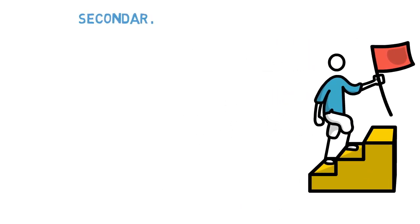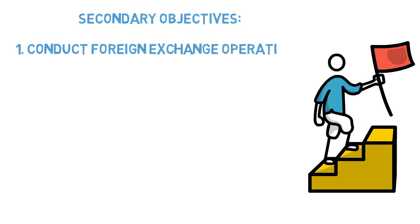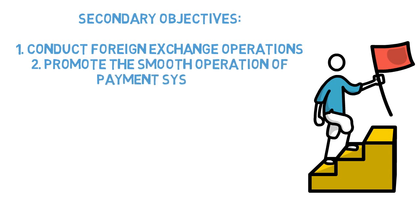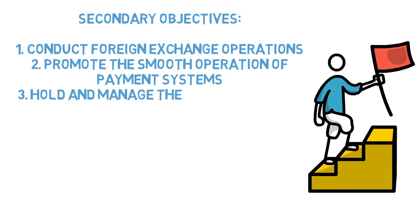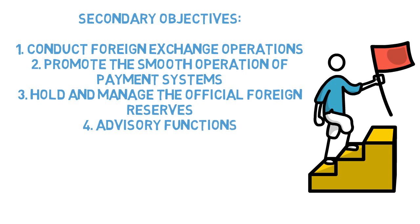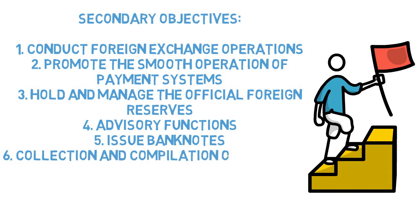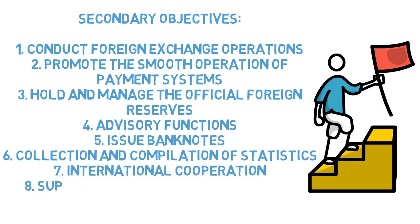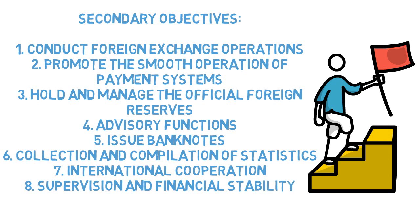The European Central Bank also has a number of secondary objectives. They conduct foreign exchange operations, buying and selling the euro and other currencies. They promote the smooth operation of payment systems within the banking system. They hold and manage the official foreign reserves of the euro area, and can trade these to prop up the exchange rate. They have an advisory function to advise banks, and are the sole body that issues euro banknotes. They also collect and compile statistics to inform policy, engage in international cooperation with other central banks, and supervise financial stability in the economy.